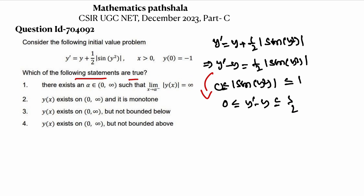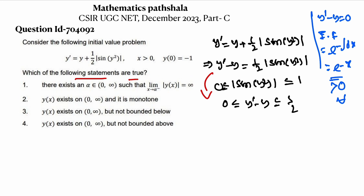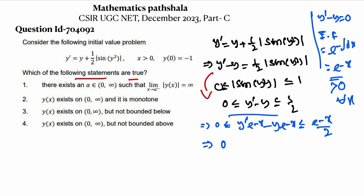For the differential equation y' - y = 0, the integrating factor is e^(-∫dx) = e^(-x). Since e^(-x) > 0 for all x, we can multiply this into every side. We get: 0 ≤ y'e^(-x) - ye^(-x) ≤ e^(-x)/2, which can be written as 0 ≤ d/dx[ye^(-x)] ≤ e^(-x)/2.